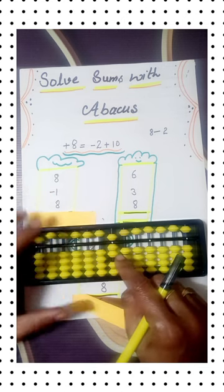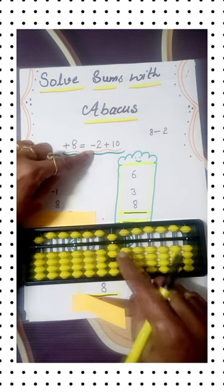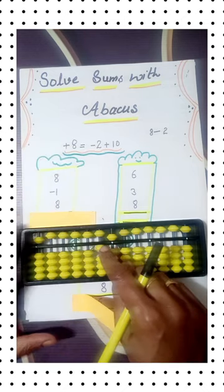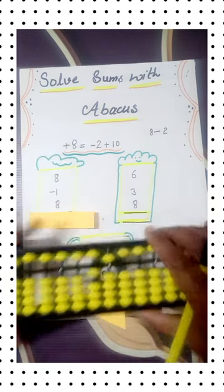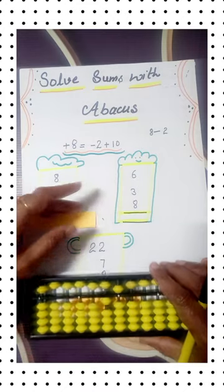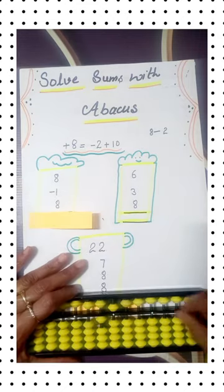We have only 2 on ones row, that's why we will apply the formula minus 2 plus 10. This is the answer: 15. Let's check, yes correct answer. Next question: 22.